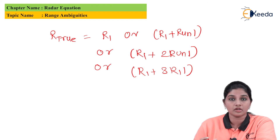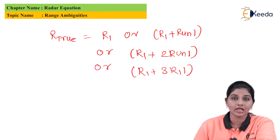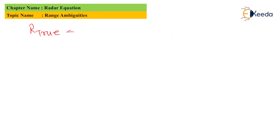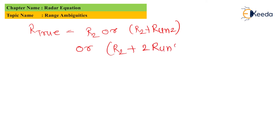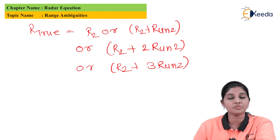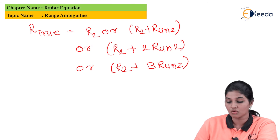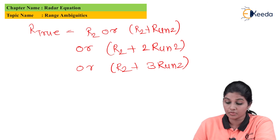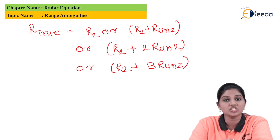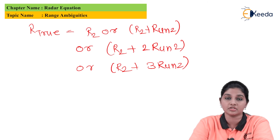Now if we change the PRF to a value F2 corresponding to the same frequency range, we obtain the true range as: R_true = R2, or R2 + Run2, or R2 + 2*Run2, or R2 + 3*Run2. So by changing the PRF value we can change the range provided by the target.